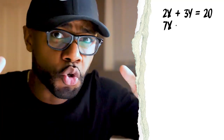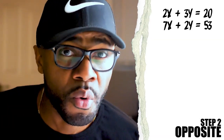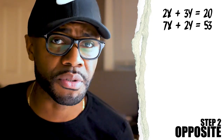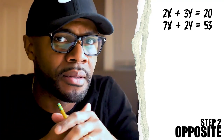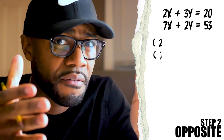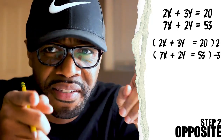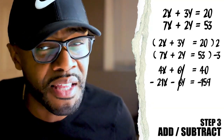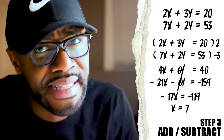Next problem reads: 2X plus 3Y equals 20, and 7X plus 2Y equals 53. Step one — lined up, we've got that. Step two — opposites. We don't have that yet, so we're going to seek the opposites of one of the variables and its coefficient. The variable I'm choosing to eliminate is Y, because the numbers are small. Small numbers are always easier. I'm going to get the exact opposites as you see on screen, then we add — that's step three — and solve, leaving us a value of X equals 7.